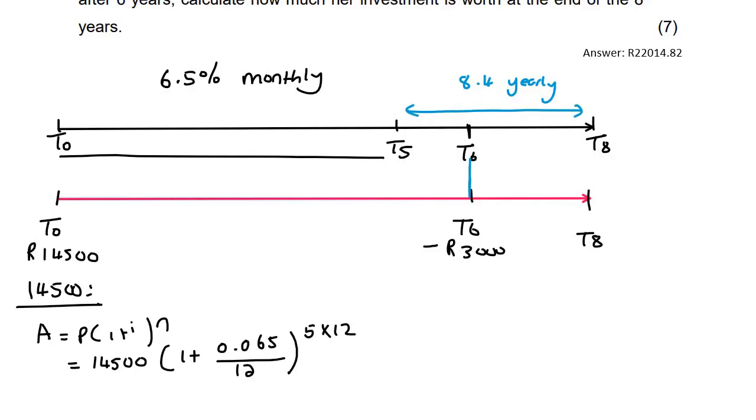So when the interest rate changes, you just use another bracket. You don't have to get the answer and recalculate. You just add on another bracket. And that's a yearly interest rate, so you don't say divided by 12, divided by 4, nothing like that. And that one goes from T5 up to T8, so that's three years. So then you can go ahead and calculate this quickly.